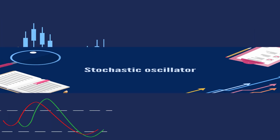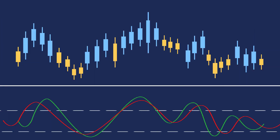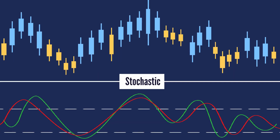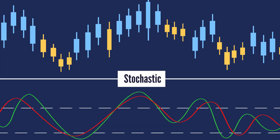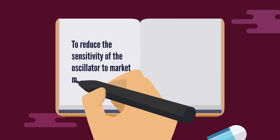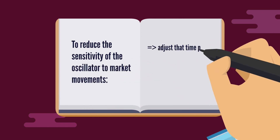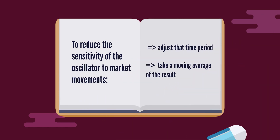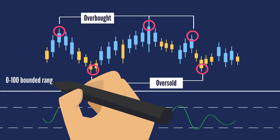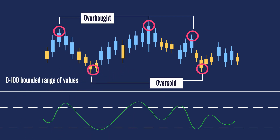A stochastic oscillator is a momentum indicator, comparing a particular closing price of a security to a range of its prices over a certain period of time. The sensitivity of the oscillator to market movements is reducible by adjusting that time period, or by taking a moving average of the result. It is used to generate overbought and oversold trading signals, utilizing a 0 to 100 bounded range of values.